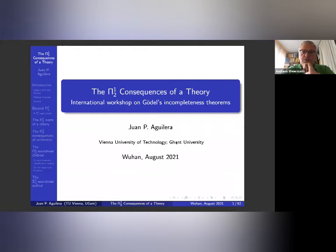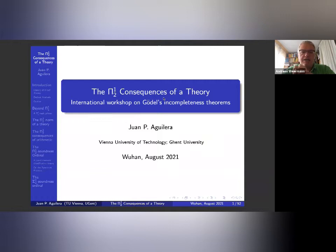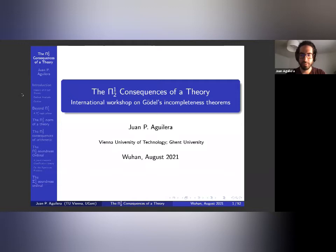The first speaker today is Ewan Pablo Aguilera. Ewan Pablo did his PhD in 2019 under the supervision of Matthias Bartz, David Finans-Duke, and Hugh Woodin. He won the Beth Prize for his PhD thesis, named after the Dutch logician Beth, and spent several months at Harvard with Hugh Woodin studying set theory. Ewan Pablo is a world expert in set theory and proof theory, and today he is speaking about π¹₂ consequences of theories — joint work with Fyodor Pakomov.